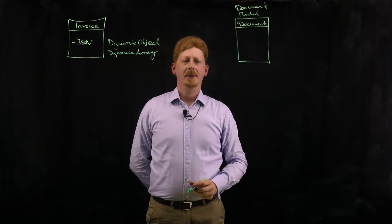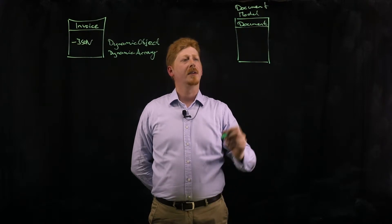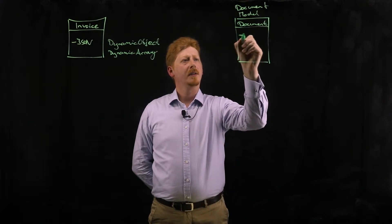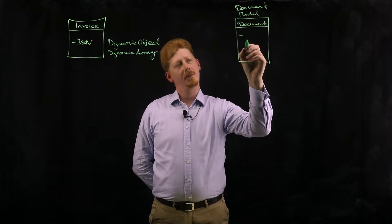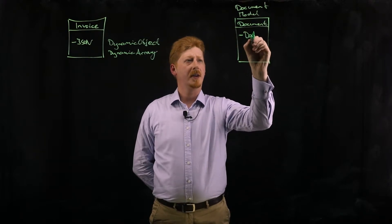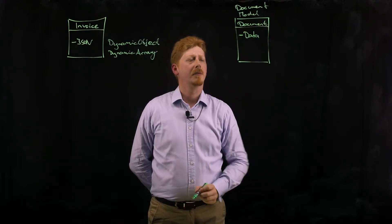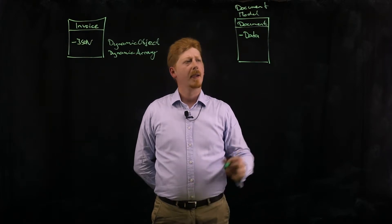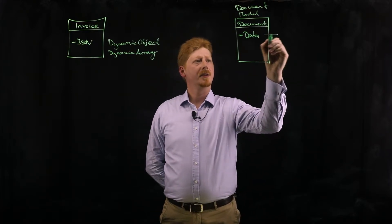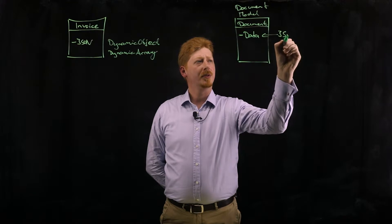And this is a specific class that you can create and subclass. It has one specific property for the dynamic content, which I would just call data here. And you assign your JSON stream to this property.